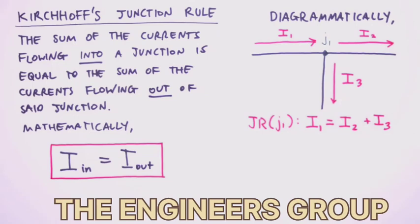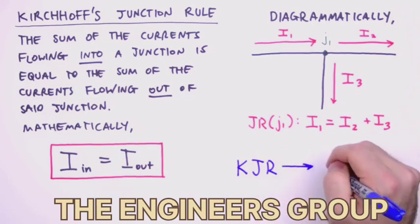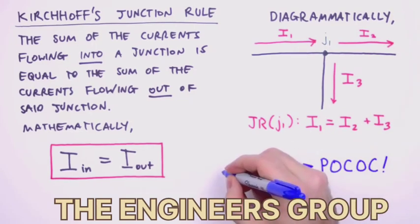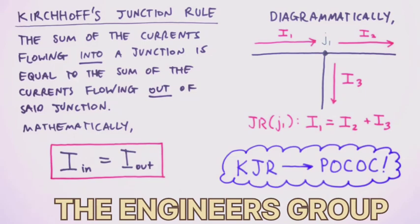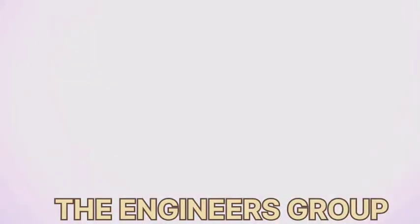Before we move on, I'm impelled to point out that Kirchhoff's junction rule is just a consequence of a more physically significant principle, namely the principle of conservation of charge. So we can sort of think of J1 as a fork in the road where the cars, I mean the charges, either continue traveling to the right or turn and move downward. Got it? Good.